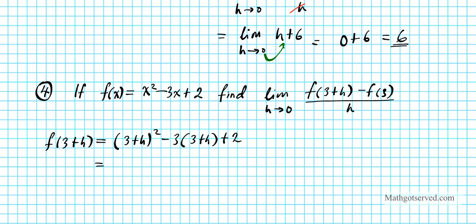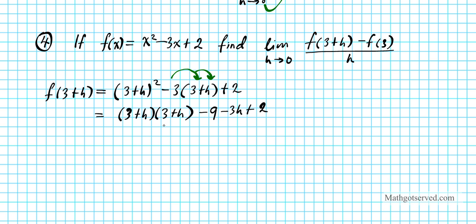Let's simplify that. We're going to have 3 plus h times 3 plus h because we have a square. Distribute the negative 3 to these two terms, which becomes minus 9 minus 3h plus 2. Then you distribute out: 3 times 3 is 9, so 9 plus 3h plus 3h plus h squared, minus 9 minus 3h plus 2.